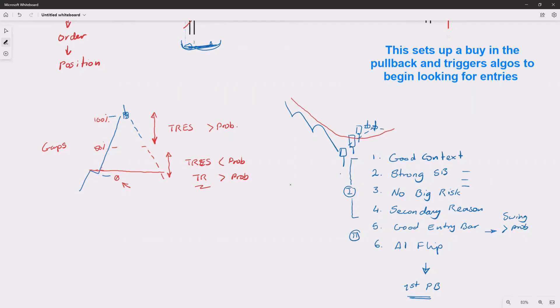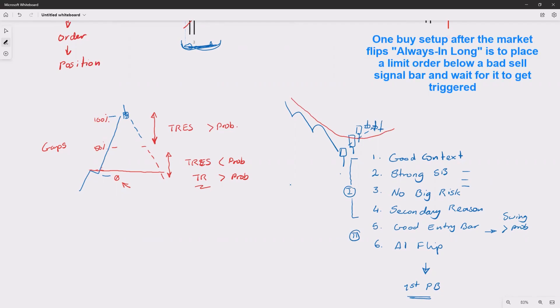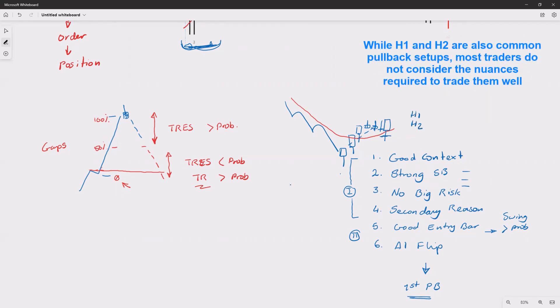One of them is look for a bad sell signal bar, like a doji or something, and wait for this to get triggered. So you put a limit order down below, expecting the next bar to produce this tail and immediately reversal. That's one entry after the market flips to always-in long. Obviously, the other ones are like high-one and high-two buys, which we are going to talk about. There are a lot of details based on my experience teaching them. Most people don't know, but this is the process.